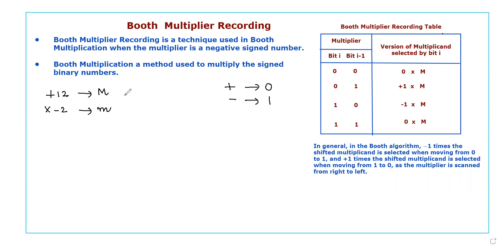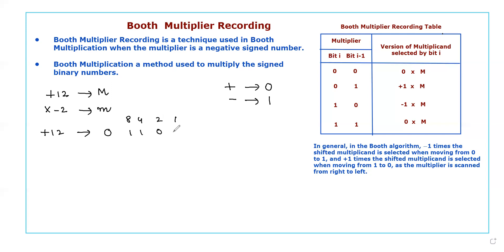Now let us write the equivalent binary values. Plus 12: the positive sign means 0, and 12 in four binary weights (8, 4, 2, 1) gives 1100. So the equivalent binary for +12 is 0 1100.